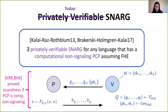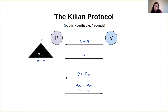Today we want to get rid of the privately verifiable clause and obtain publicly verifiable SNARGs. To do this, we depart from the privately verifiable non-interactive argument and talk about a publicly verifiable interactive argument — specifically, the famous Kilian protocol.